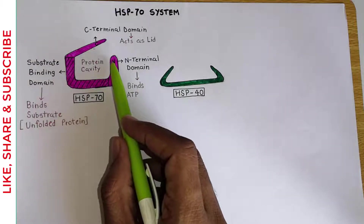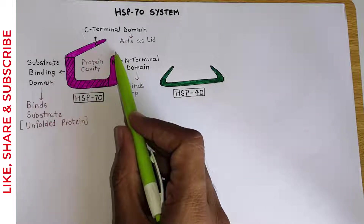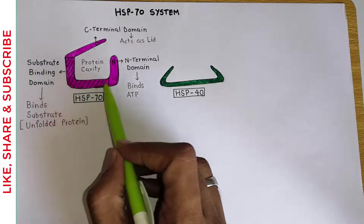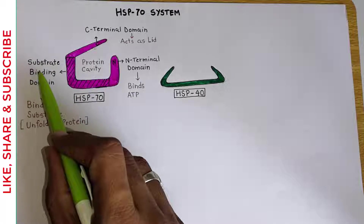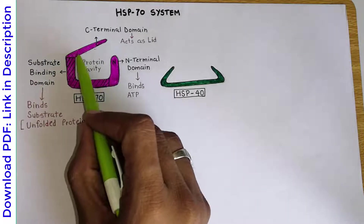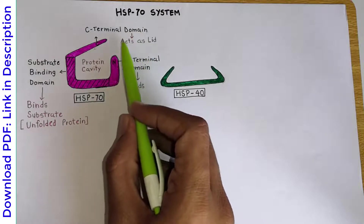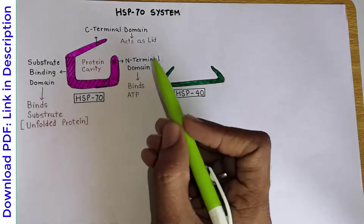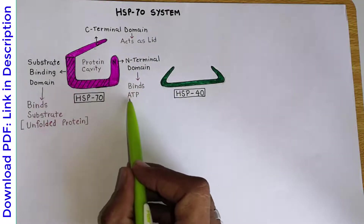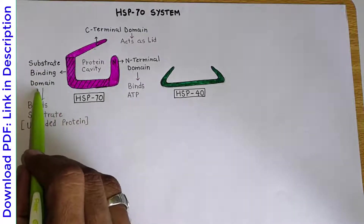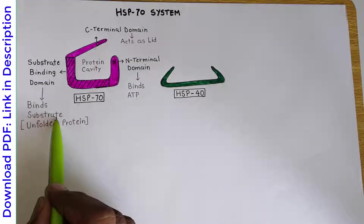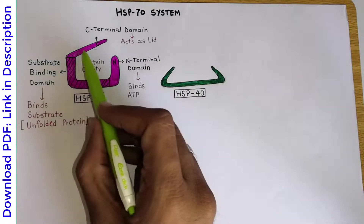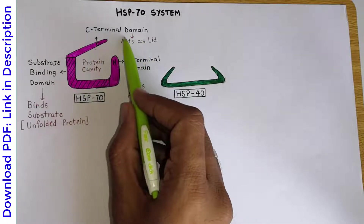This protein has three domains in its structure. The first domain is the N-terminal domain. The second domain, which is shown in the diagram by the shaded area, is the substrate binding domain. And the third domain is the C-terminal domain. All of these domains' functions are well defined. The N-terminal domain is involved in binding with ATP. The substrate binding domain binds with the substrate, which in this case is the unfolded protein. And the C-terminal domain acts as a lid.